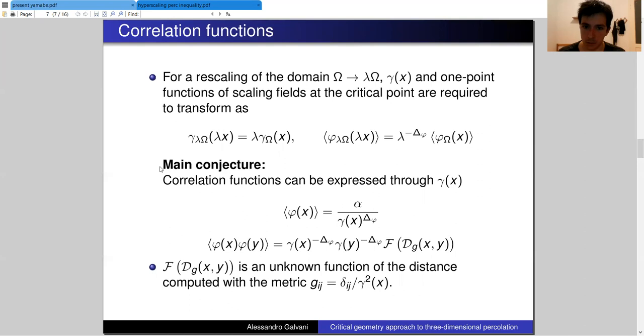Since there are no other length scales within the system, from this follows quite naturally our main conjecture, which is that correlation functions of the fields can be expressed through this function gamma of x. We cannot fix the one-point function entirely, but what is important is that one-point functions are expressed by gamma to the power delta phi.